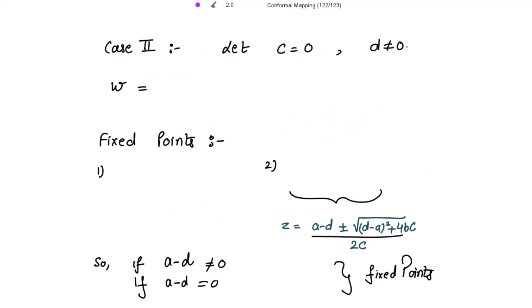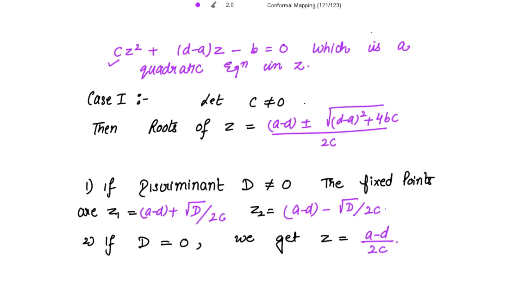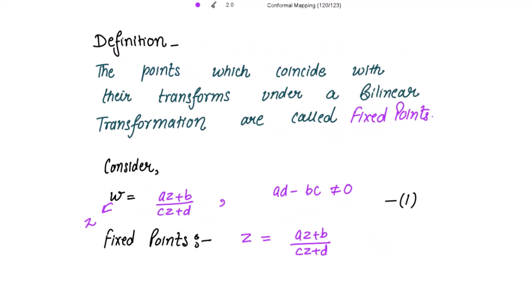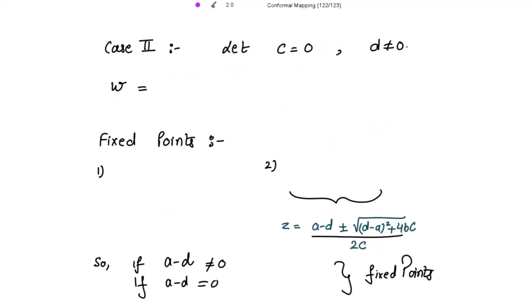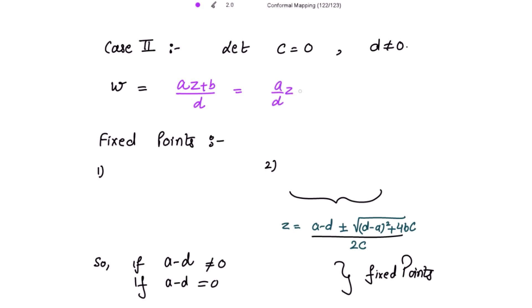The other case is: let c equal to zero and d be non-zero. Then the transformation becomes — if you put c equal to zero — you get az plus b over d. So for c equal to zero, we get the transformation as w equal to (a over d)z plus b over d.